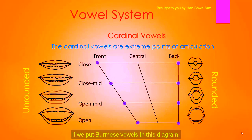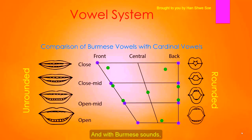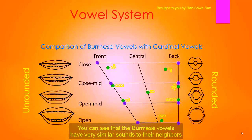If we put Burmese vowels in this diagram, we will see how they map. With Burmese sounds, now it all makes sense, right? You can see that the Burmese vowels have very similar sounds to their neighbors on the chart.